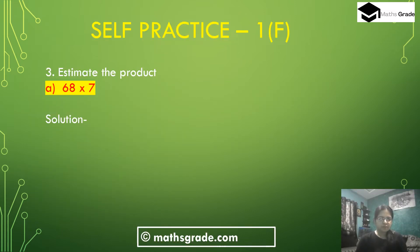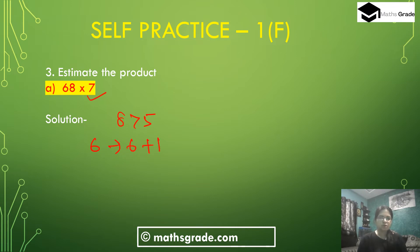Question number 3, part A: estimate the product 68 multiplied by 7. We have to estimate this product. 68 rounded to the nearest 10 — the unit place digit is 8, and 8 is more than 5, so add 1 to the tens place digit. Now 6 changes to 6 plus 1, that is 7, and the unit place digit 8 changes to 0. So 68 rounded to the nearest 10 will be 70.